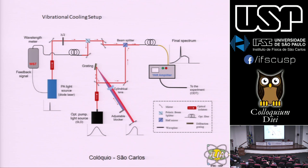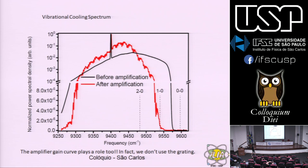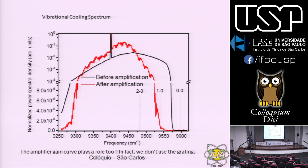O feixe tem 300 milivatts e largura de banda de 20 nm. O que entra é um espectro largo, o que sai é cortado — sem a transição zero-zero. Antes da amplificação, o feixe já está cortado. Depois passamos pelo amplificador: entram 5 milivatts e saem 50. Fazendo o espectro sem a banda larga e depois com a banda larga: quando a gente liga a banda larga, obtemos os estados vibracionais baixos. O parecerista reclamou que alguns estados já estavam presentes antes da banda larga — isso acontece porque com 4 megawatts por cm² há transições fora de ressonância.